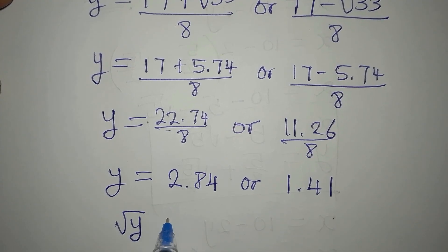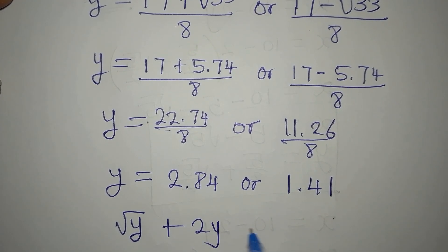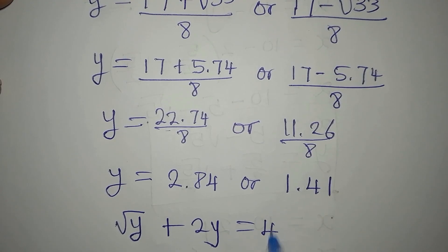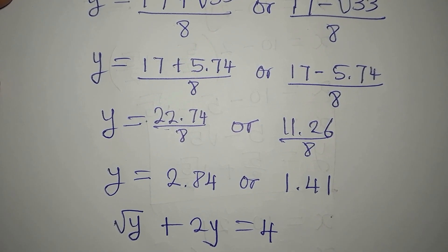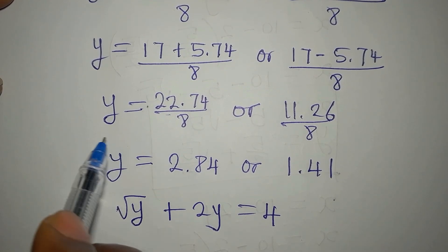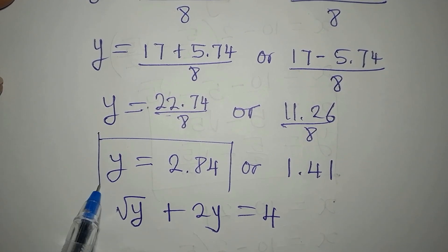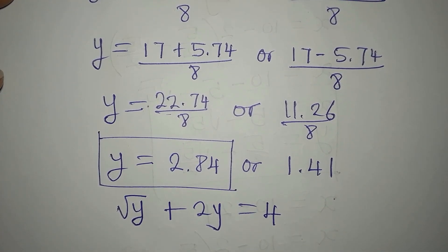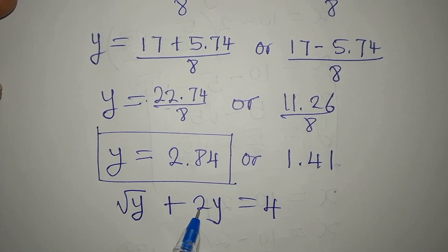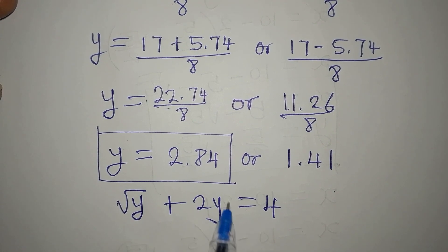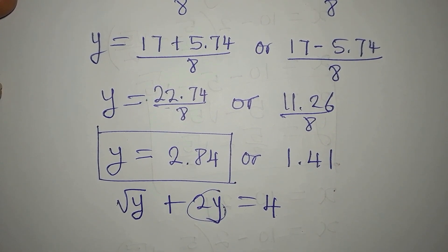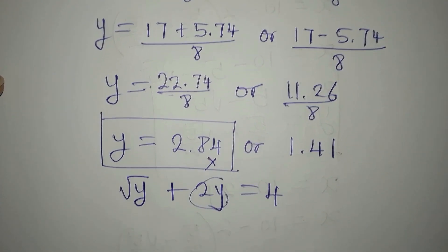Obviously we know the one that should satisfy. If we pick this one to satisfy, you will see that it will not, because we have 2y here, that would be 2.84 times 2, and that's already more than the 4. So this right here cannot satisfy.